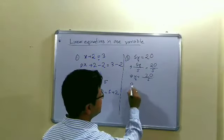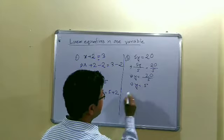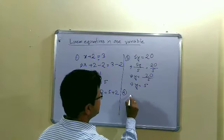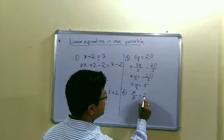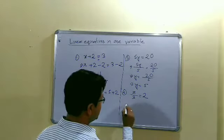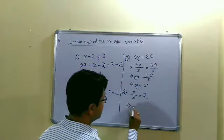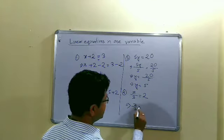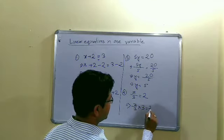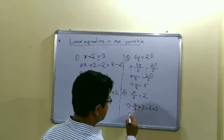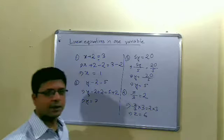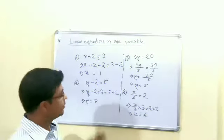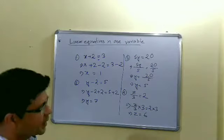For this reason, because initially we have divided, so y = 4. Number 4: suppose z/3 = 2. What we do? We want to find z. z by 3, we will multiply both sides by 3. 3 gets cancelled, z = 6.